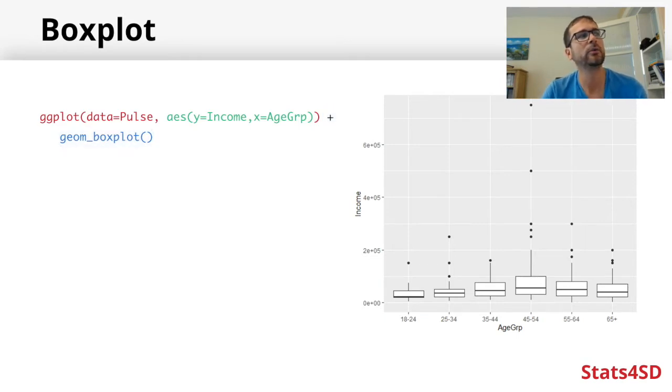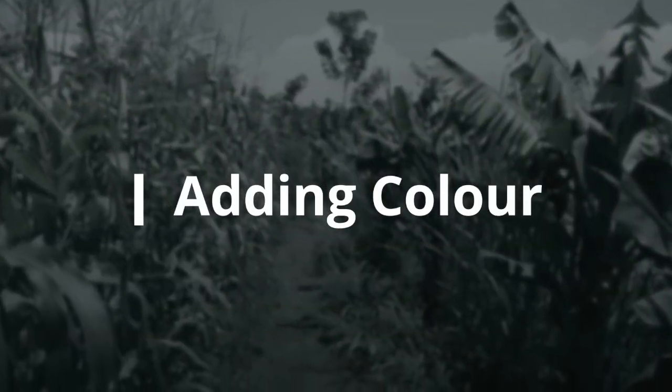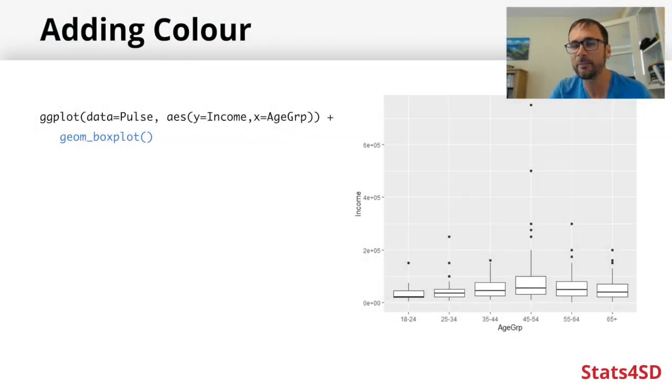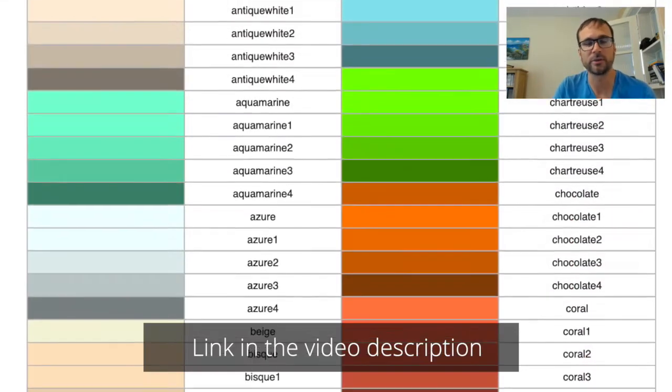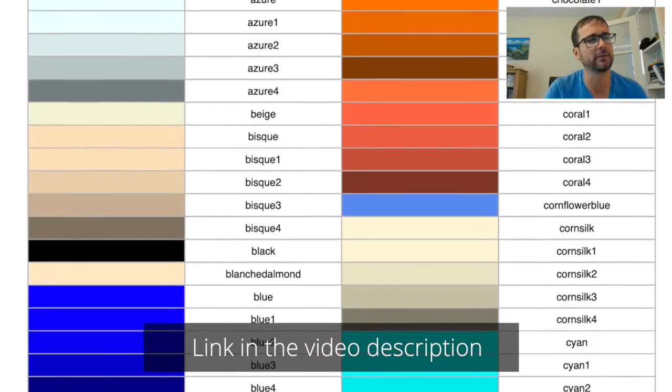When we start thinking about what's next with this plot, one of the first things people want to do is add some color. The simplest way is to add it within the geom_boxplot function. We can add color equals "red" - and a color name should always be in quotation marks. This colors in the lines which make up the box and the points in the specified color. We have to pick a valid color name in R.